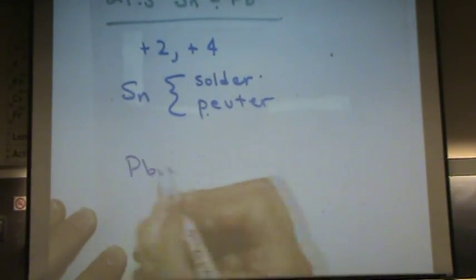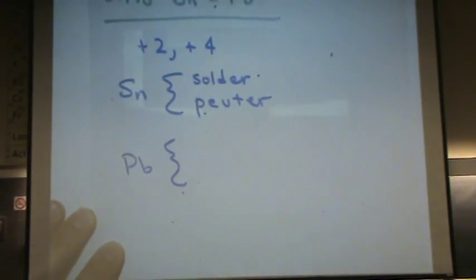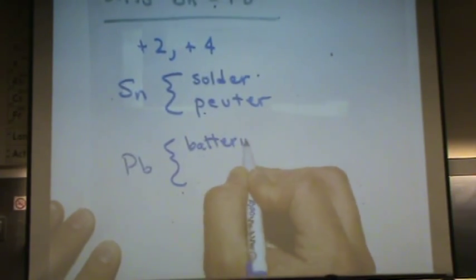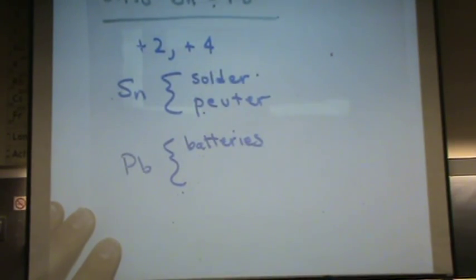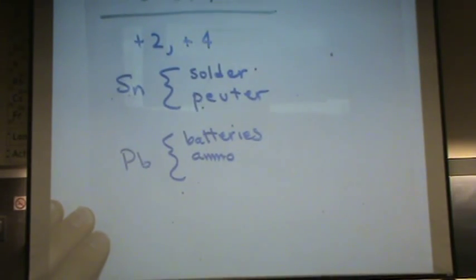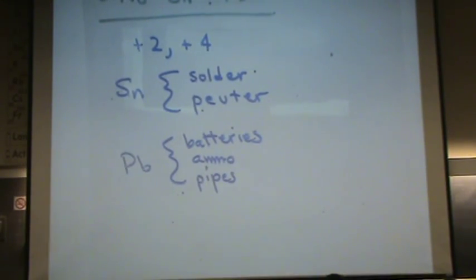Lead. Where have we really seen lead before? The lead acid batteries, so the lead acid storage batteries. Also ammo - ammunition has lead in it, and pipes. We're going to see something interesting later.